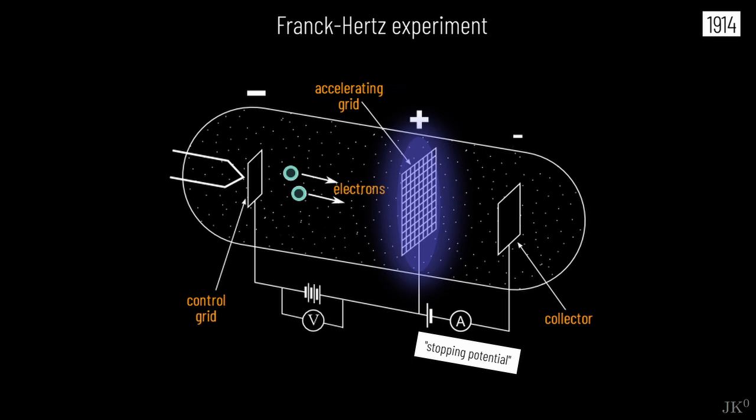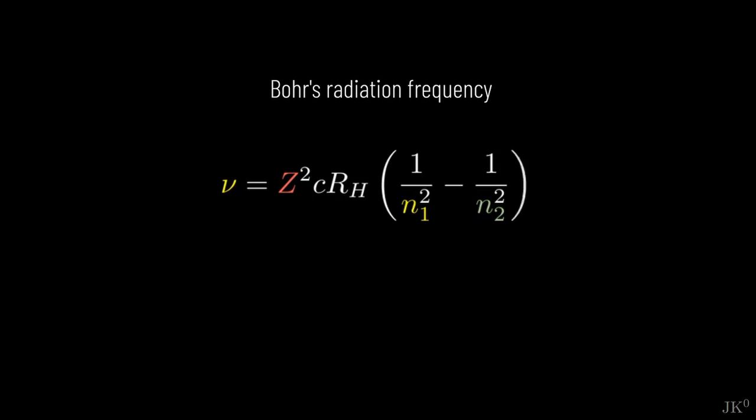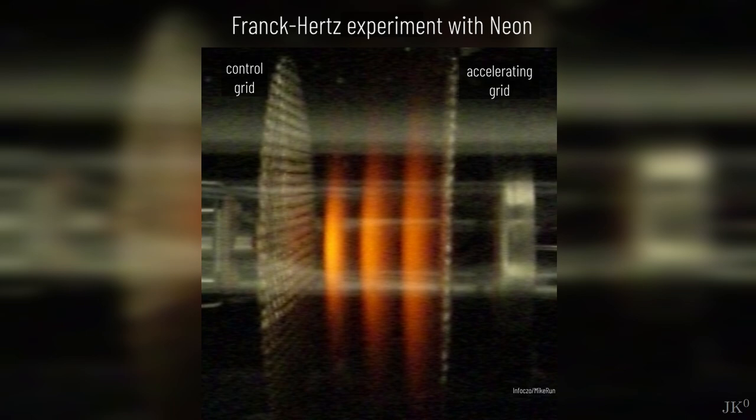Remember that according to Bohr, the radiation frequency is proportional to z squared. In particular, a widely used version of the Franck-Hertz experiment, with neon gas instead of mercury, allows visually identifying the regions in the tube where inelastic collisions take place, and the electrons transfer their energy to the neon atoms. This is what we see in this image as the glowing regions.